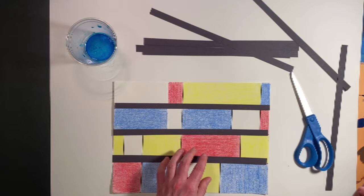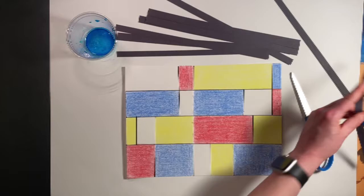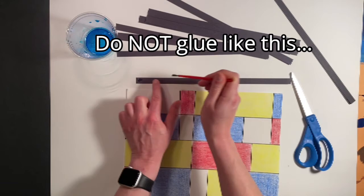You'll see here I am applying some glue, and watch the way that I am doing this. This is how you don't want to apply the glue. This way isn't very efficient. You can do it this way, but it's more likely to get all over your hands.